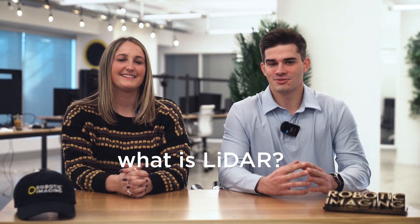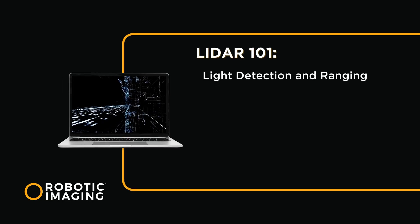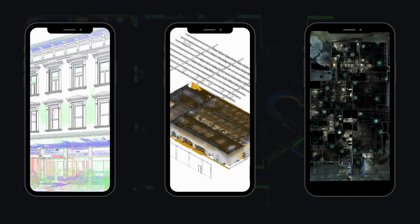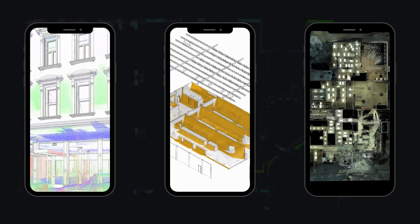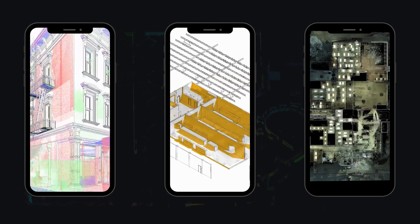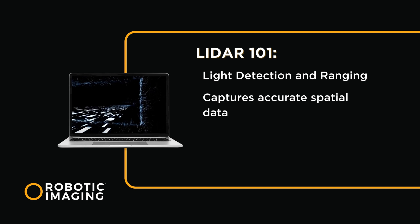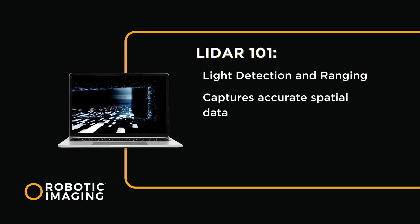What is LIDAR? LIDAR stands for Light Detection and Ranging, a technology that uses laser beams to measure distances and create highly accurate 3D representations of objects or environments. LIDAR scanners emit laser pulses and capture the reflected light, allowing for precise measurements and point cloud generation.